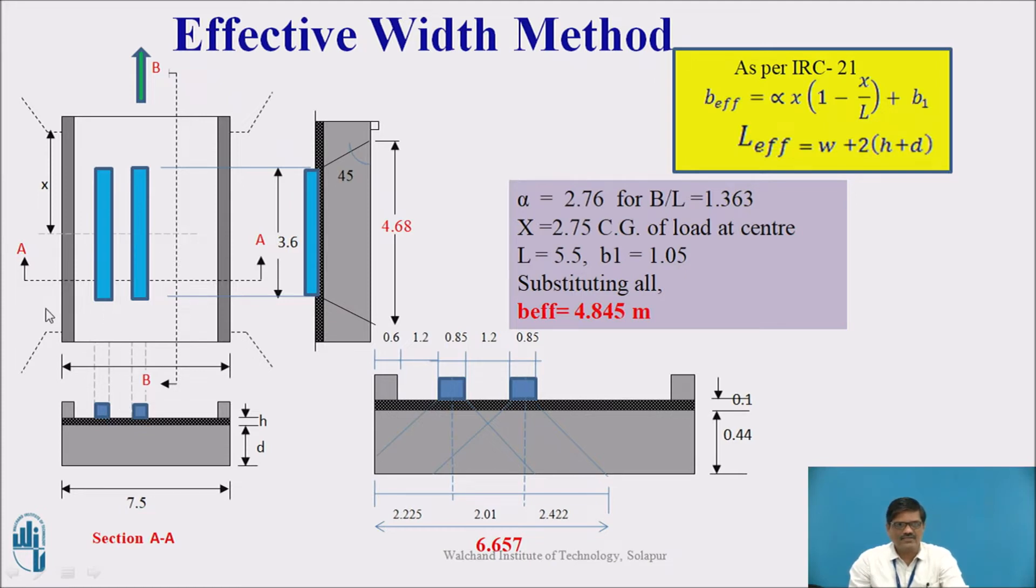If I take a section AA, it would look like this. The carriageway width is given as 7.5 meter, and the thickness of the wearing coat we consider H, and thickness of the slab we consider D. In the section, we can see the patches, blue patches, and this particular load is to be distributed. On the right hand side is the enlarged view of the same picture. The blue patches or blue blocks show the live load.